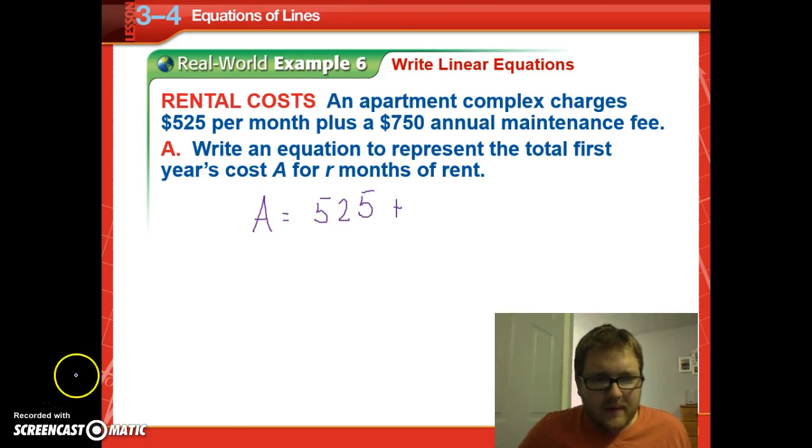All right, so now we're going to look at a word problem. We have an apartment complex charges $525 per month plus a $750 annual maintenance fee. So write an equation to represent the total first year's cost, A, for r months of rent. So we're looking for a total yearly cost. That's going to equal 525 times how many months. We're going to call the number of months x plus the $750 fee that you get no matter what. No matter how many months you stay there, you're going to have to pay $750. You might start to look at this notice. Notice this looks like a slope-intercept form equation.